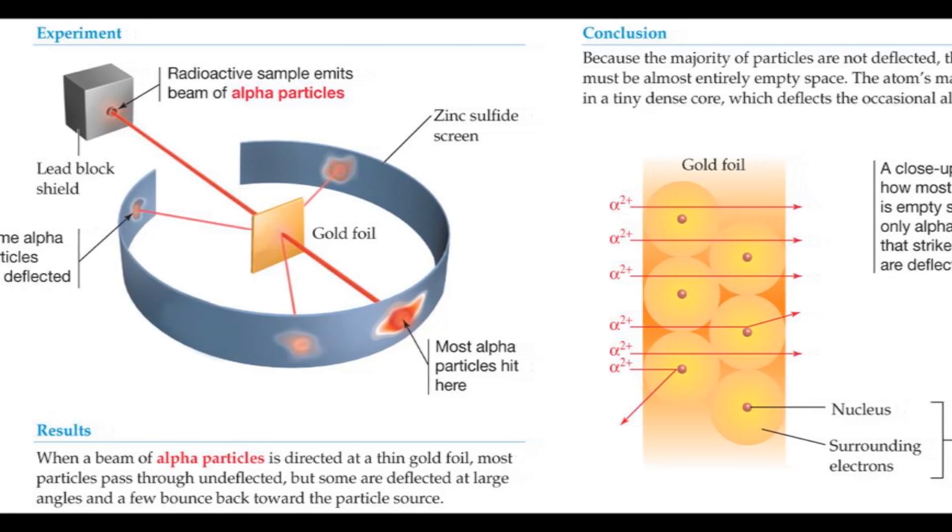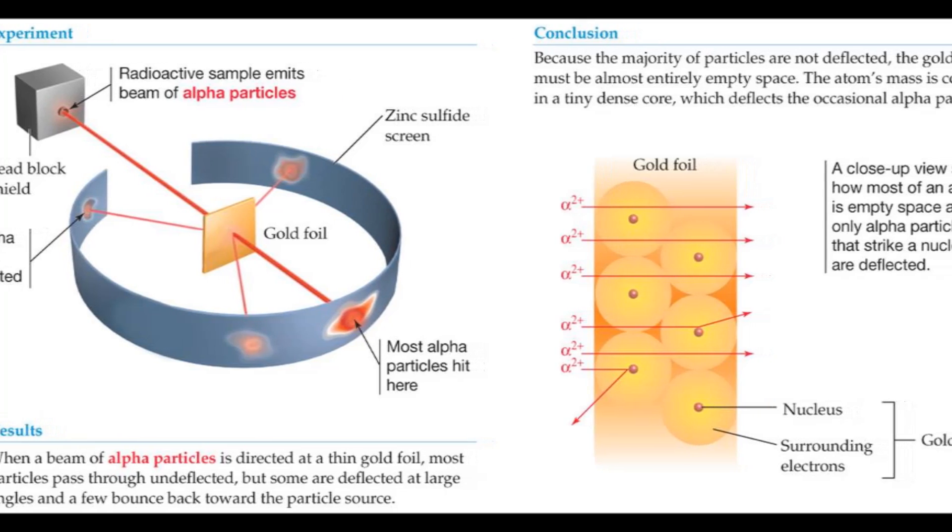However, this theory was soon usurped by Ernest Rutherford's idea, the nuclear model. Rutherford found, by bombarding gold foil with alpha particles, that Thompson's idea was wrong.